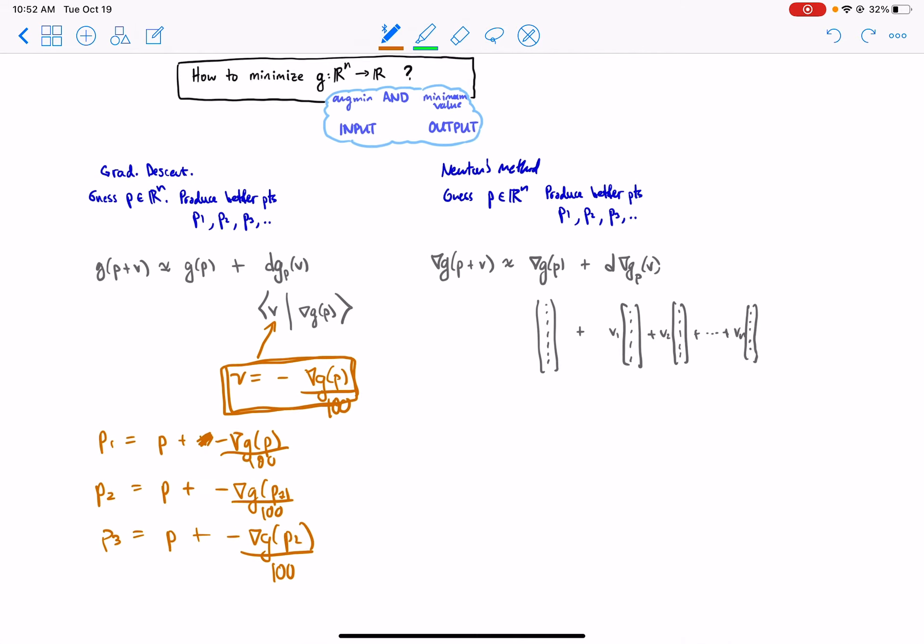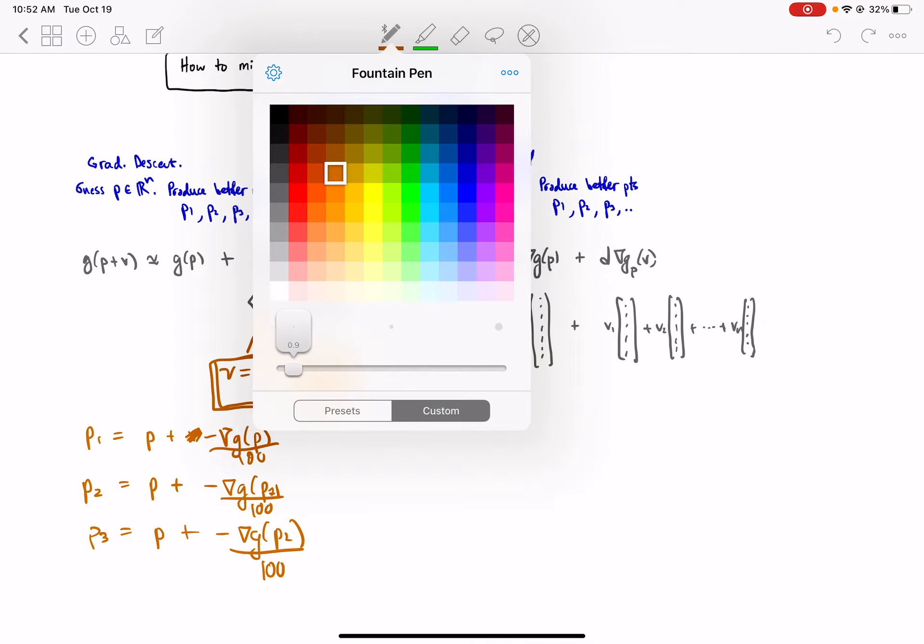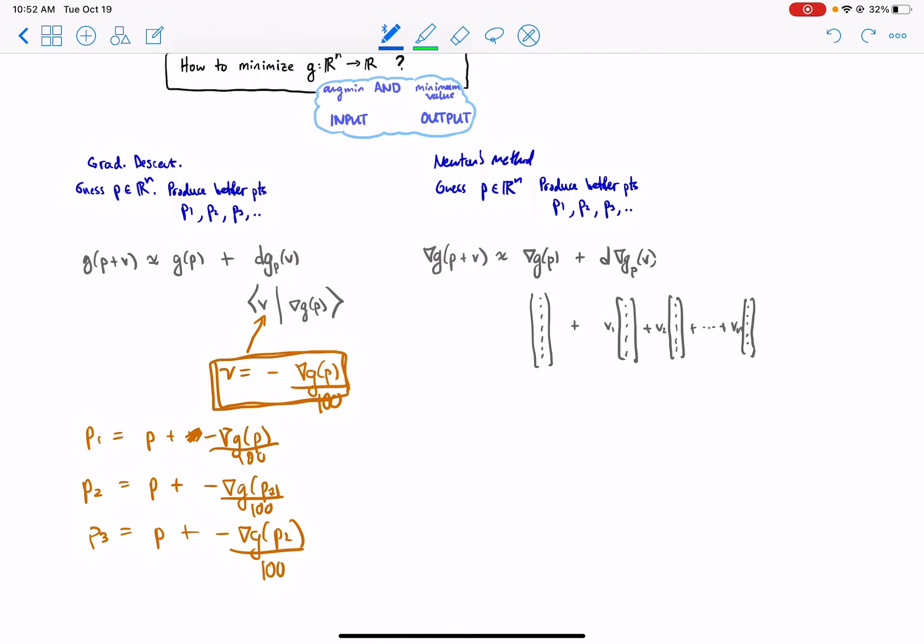But what does Newton's method do? Newton's method actually tries to do something very different. Try to find critical points. What are critical points? They are where the gradient of G at that point—let's say the new point we want to find—is equal to the zero vector.